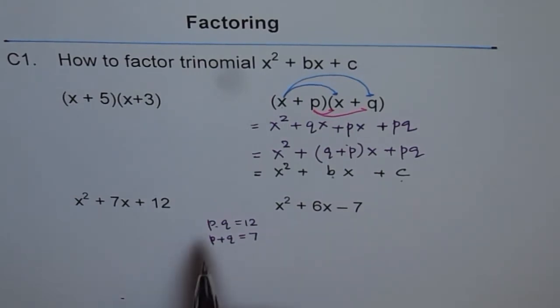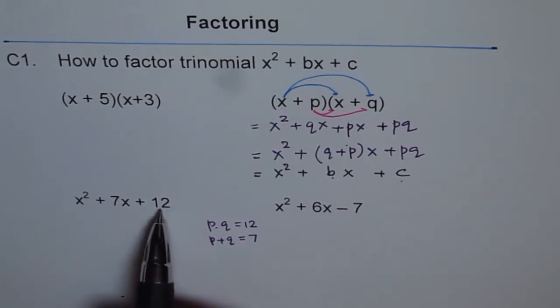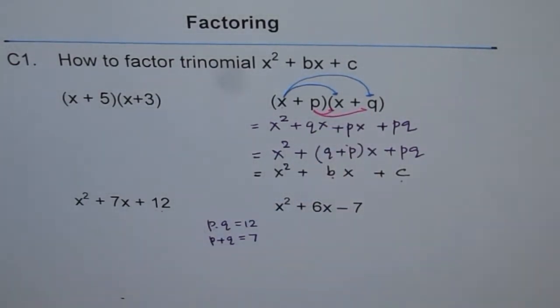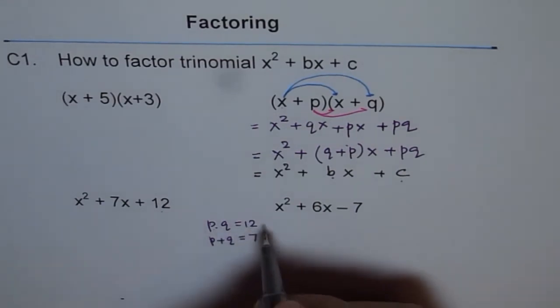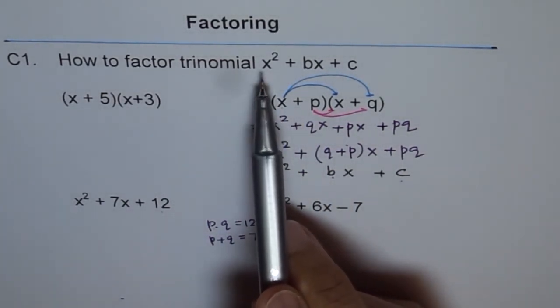That means I am looking for two numbers whose product is this number and whose sum is the middle number. Middle number here means coefficient of x and this constant number means product of these two numbers. So that is kind of key to understand factoring of trinomial where coefficient of x is 1.